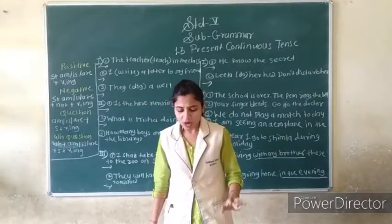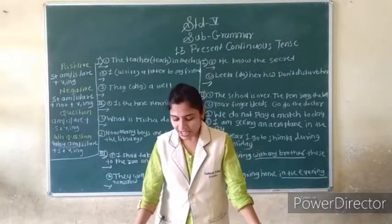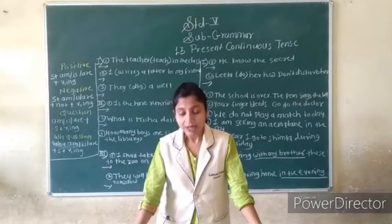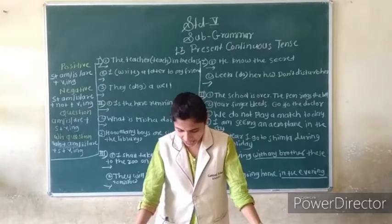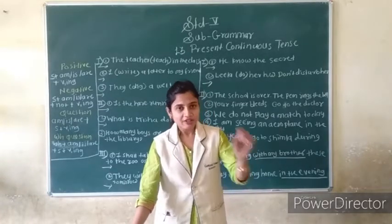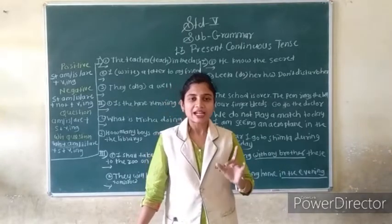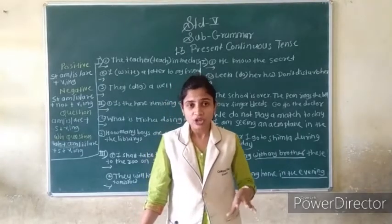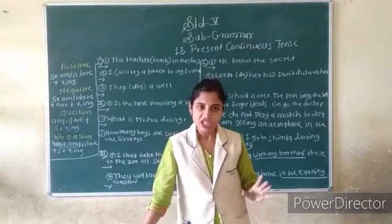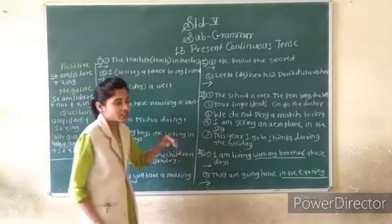Question number 1: Put the words in the bracket into present continuous tense. Page number 31. In that exercise, whatever words are given in the bracket, you are writing them in the present continuous tense. Let us start with the first question.